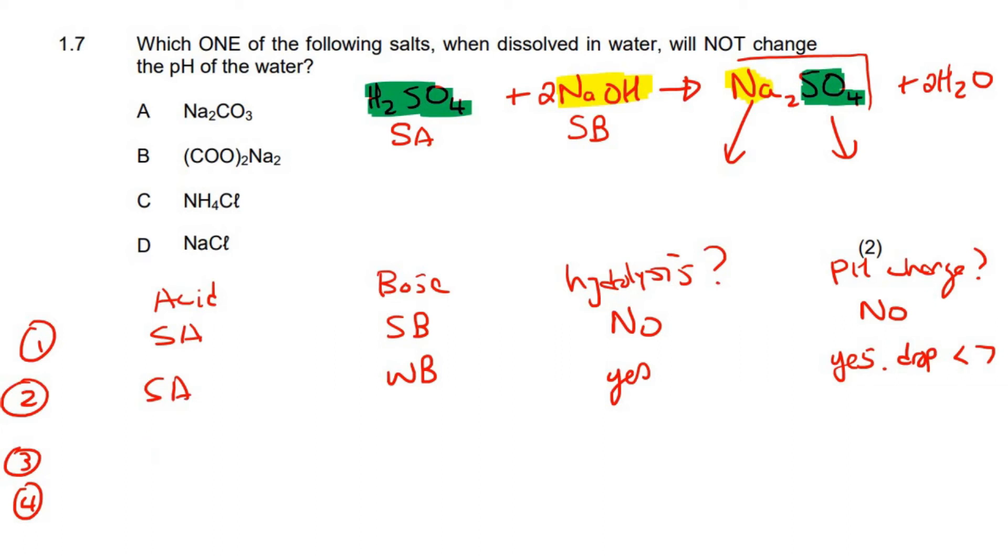Now, if you have a weak acid and a strong base, will hydrolysis happen? Yes. And the pH change? Yes. And it will go above seven. So the pH will be greater than seven. So let's just go pH. Smaller than seven, pH bigger than seven.